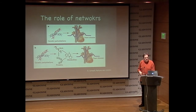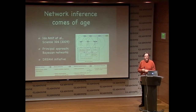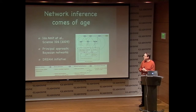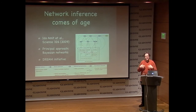One area that addresses that is called network inference. It's something that's really taking off in the past few years. Among other things, there are a few high-profile articles that derive these networks from measurements of RNA under external perturbations or RNAi perturbations. One principal approach being taken, for instance, in this paper has to do with Bayesian networks. There's also the DREAM initiative that tries to provide a platform to evaluate all of these approaches.